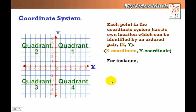Now, each point in the coordinate system has its own location, which can be identified by an ordered pair. The first value in the ordered pair is called the x-coordinate. The second number is called the y-coordinate. For instance, 3 and negative 2. The x-coordinate is 3.